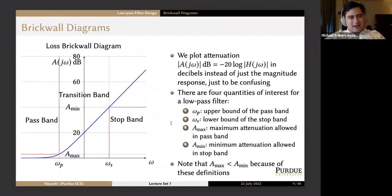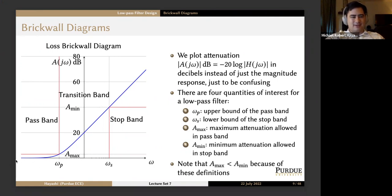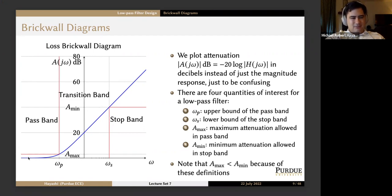Last time we talked about brick wall diagrams, which are almost made to be confusing because instead of plotting the magnitude response, they plot attenuation, which is the negative of magnitude response. They start at zero for passing through unchanged and get higher and higher for signals that are attenuated. So the pass band brick wall goes nice and low, and the stop band brick wall goes fairly high.